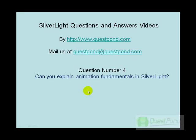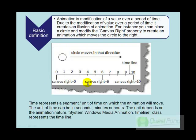Second, we will try to understand what is a timeline. And finally, we will try to understand three types of animation supported by Silverlight. From a 30,000 feet level, animation is nothing but modification of a value over a period of time.